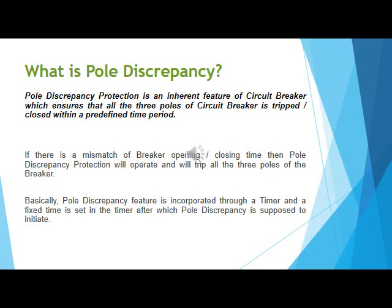The pole discrepancy feature is incorporated through a timer, and a fixed time is set in the timer after which pole discrepancy is supposed to initiate. Suppose the time is set at 2.5 seconds in the pole discrepancy timer — then if there is a mismatch of more than 2.5 seconds in breaker opening or closing time, pole discrepancy shall operate and shall trip all three poles of the circuit breaker.